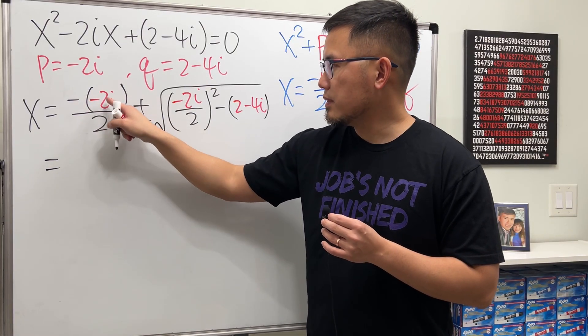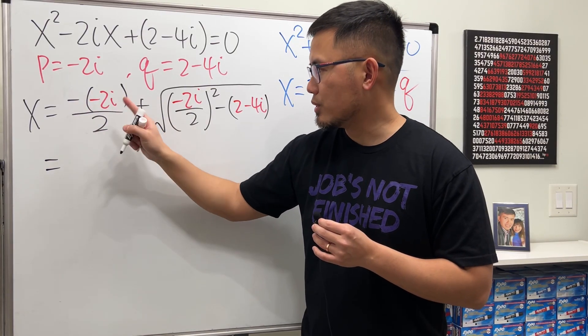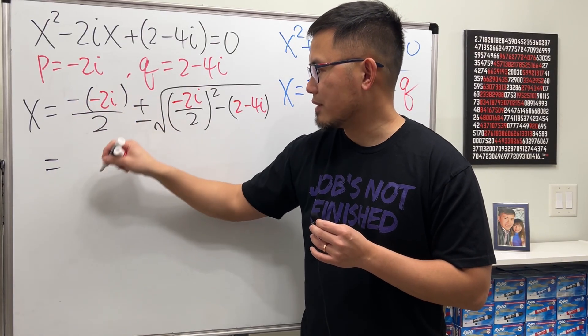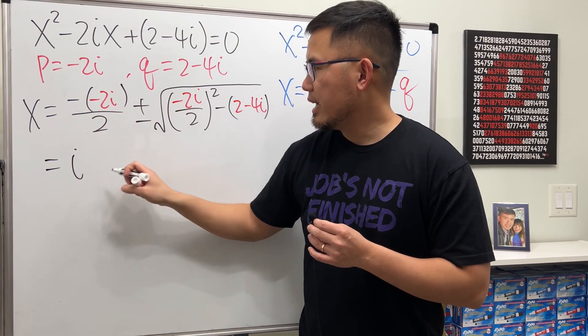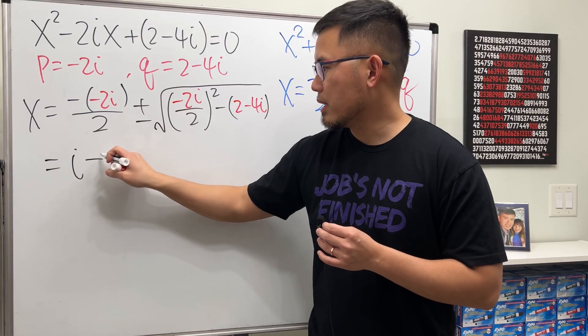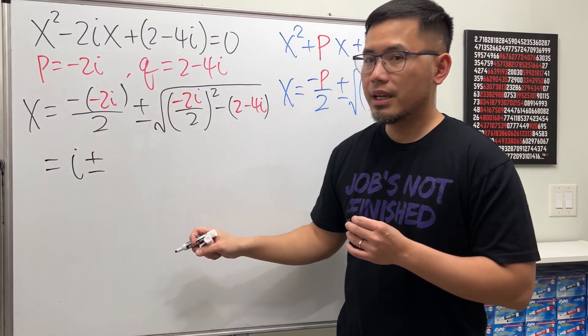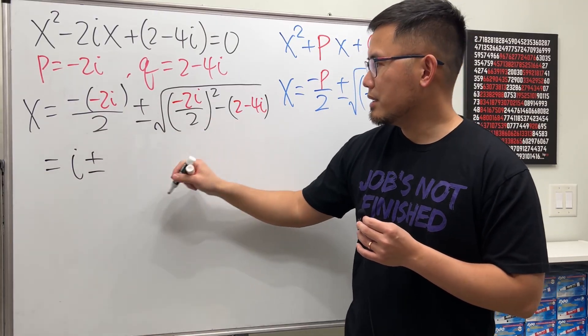Simplifying the outside: negative times negative is positive, and 2 over 2 is 1, so we get i. Now let's work out the inside of the square root.